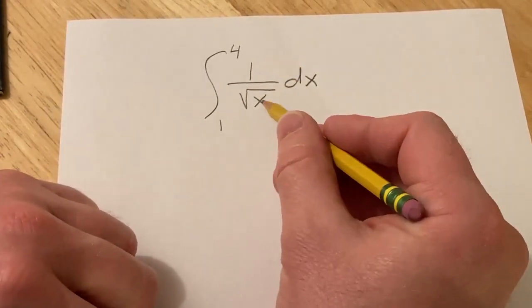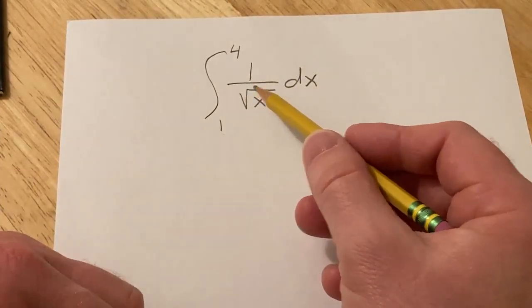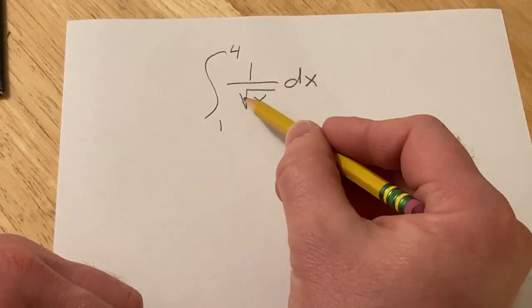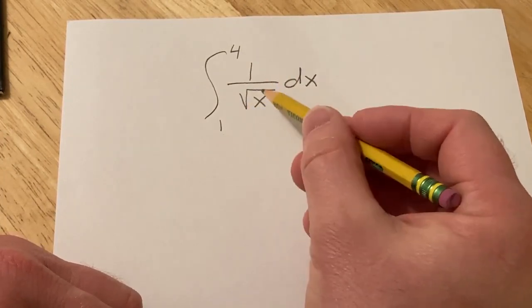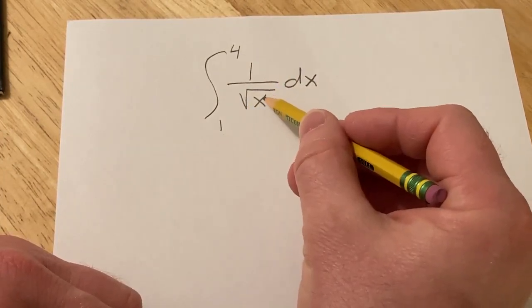So to do this problem we first have to write the integrand in a way that allows us to integrate it. Because we have a square root of x here, what we can do is we can write it as x to the 1 half.